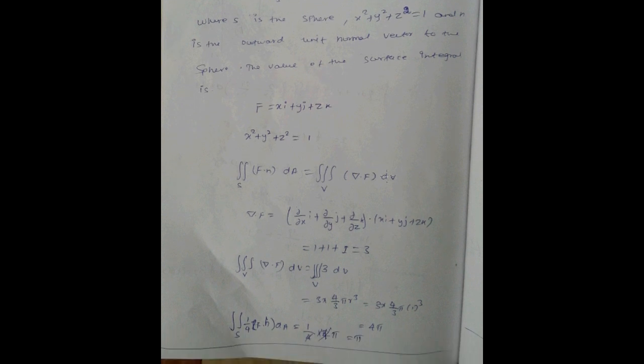Remember Gauss theorem formula. Double integral becomes triple integral, dot product, then one time differentiate with f: 1 plus 1 plus 1 equals 3, then sphere.